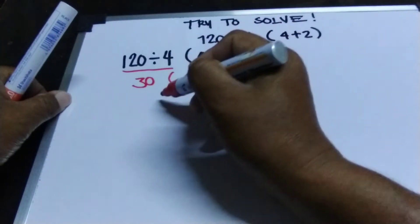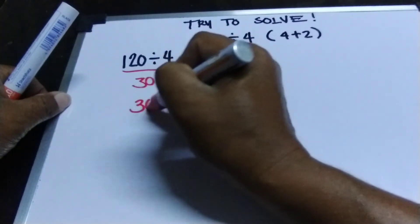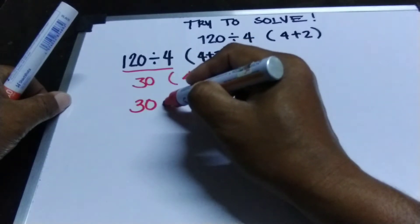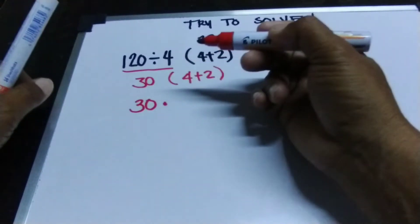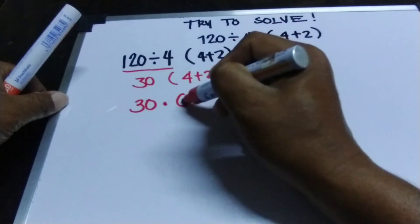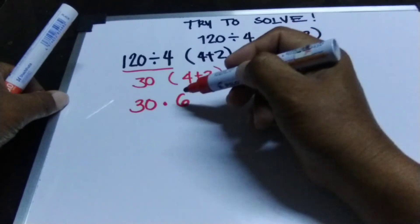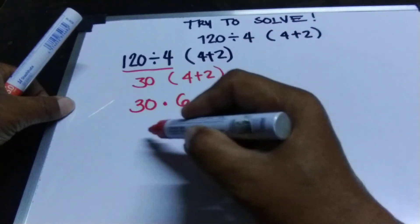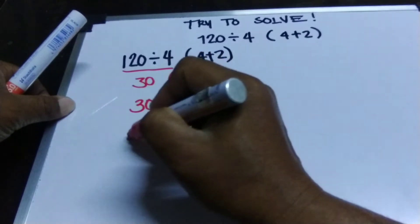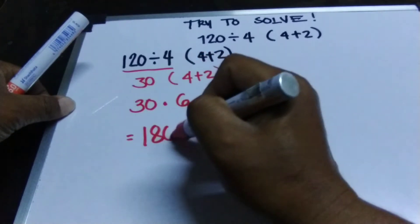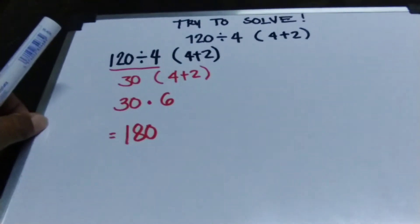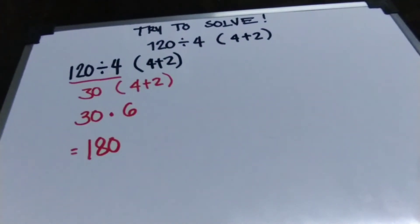So this represents multiplication, so I will put the multiplication sign. 4 plus 2 is 6, therefore this is equals to 30 times 6, which is equals to 180. So that is the first solution.